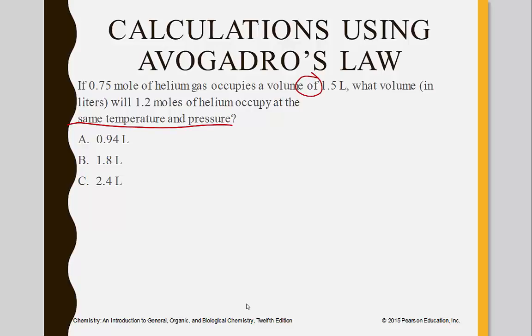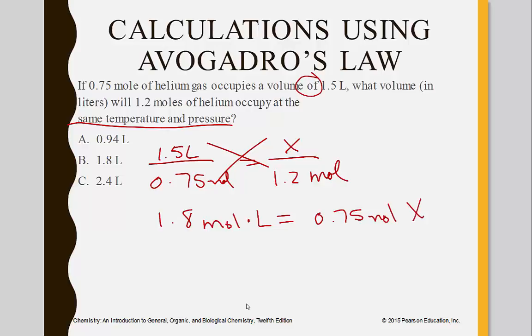So V of the first one is 1.5 liters, and that's 0.75 moles. What volume is 1.2 moles? We're going to cross multiply and divide because of the ratios. So 1.5 times 1.2 is equal to 0.75 moles times X. Divide both sides by 0.75 moles. The moles cancel, that leaves us with liters. And that calculates out to be 2.4 liters.